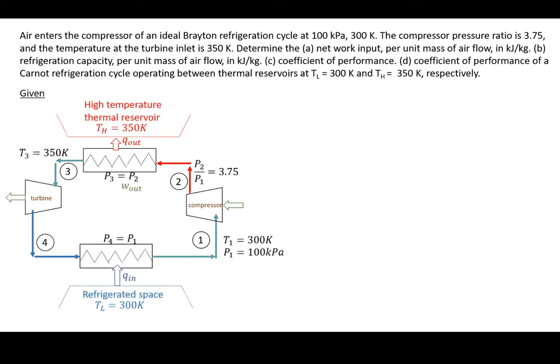So state one is at 100 kilopascals and 300 Kelvin. Compressor ratio P2 over P1 is 3.75 and the turbine inlet temperature is 350 Kelvin.